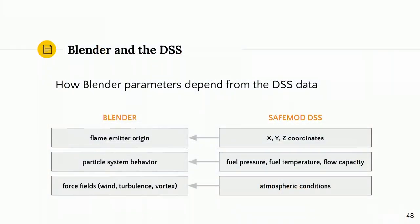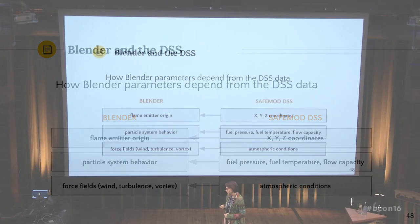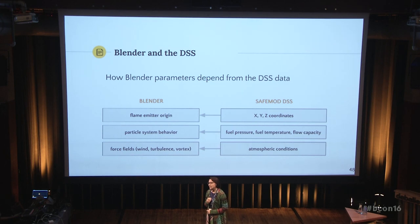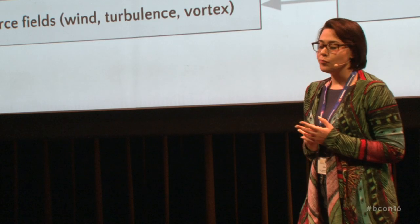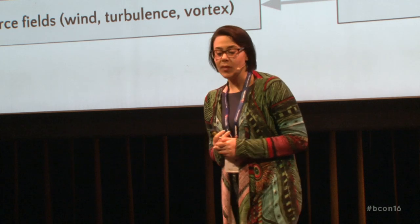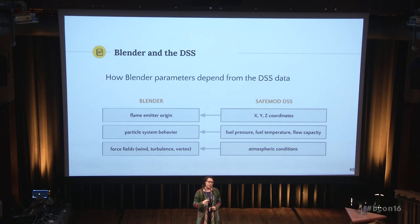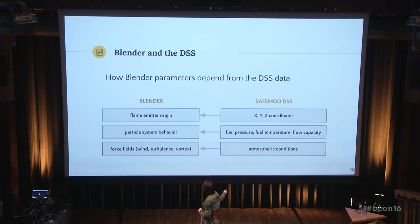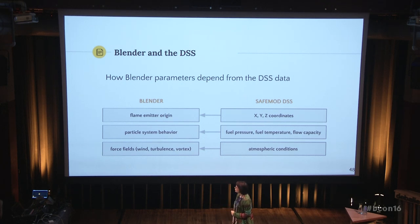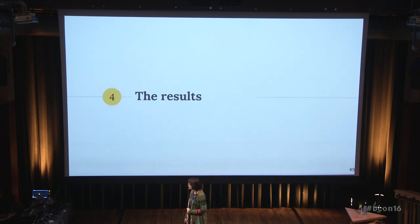The main part of the communication between the DSS and Blender is the translation of parameters. The DSS has its own representation of the refinery, made by settings which include the physical parameters of assets of the refinery and the flame type to be simulated. Much of this information is translated into Blender settings, including the particle system and the actual emitter of the flame.